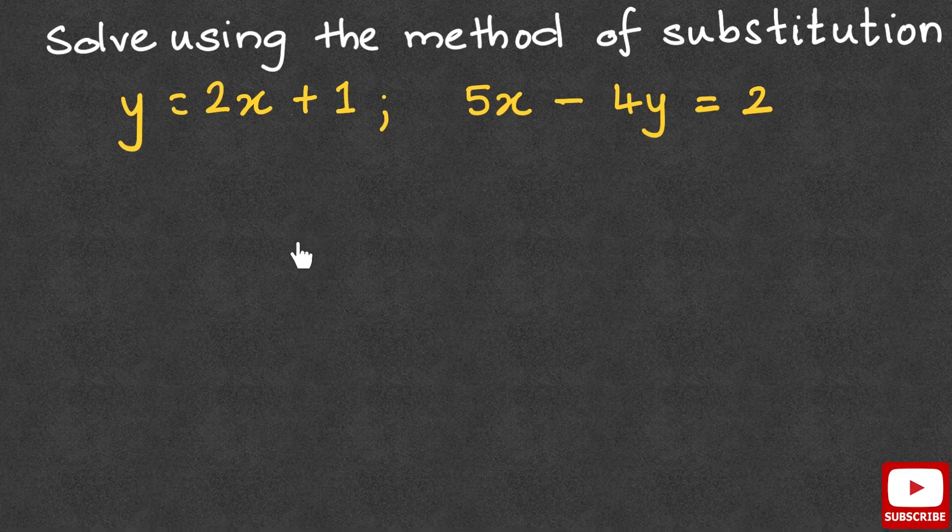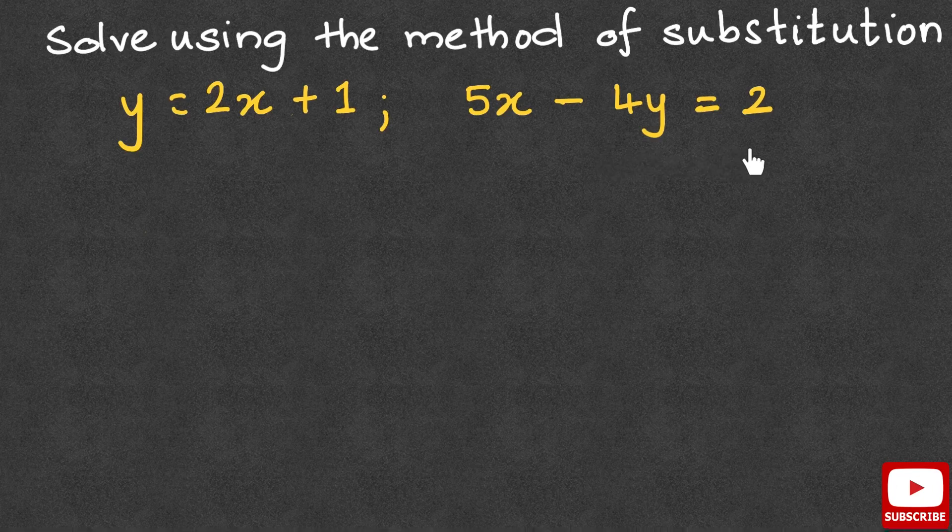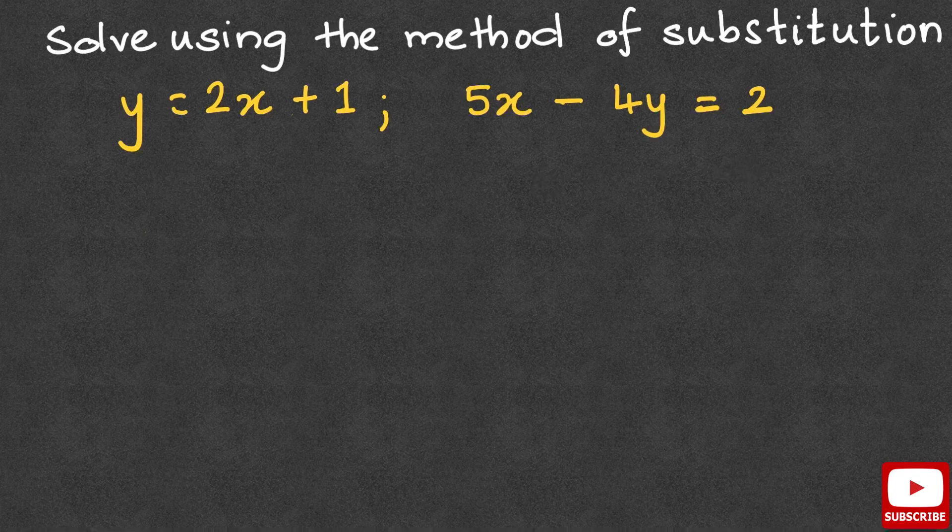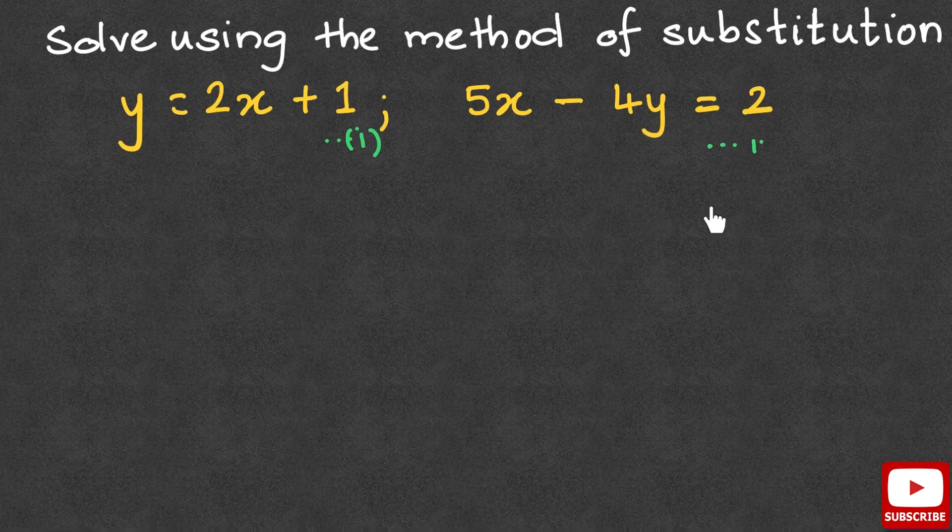Here we have a set of simultaneous equations: y equals 2x plus 1 and 5x minus 4y equals 2. Now when we say that we need to find a solution of these simultaneous equations, what we actually mean is we need to find the values of x and y. Let's call the first equation as equation 1 and this as equation 2.